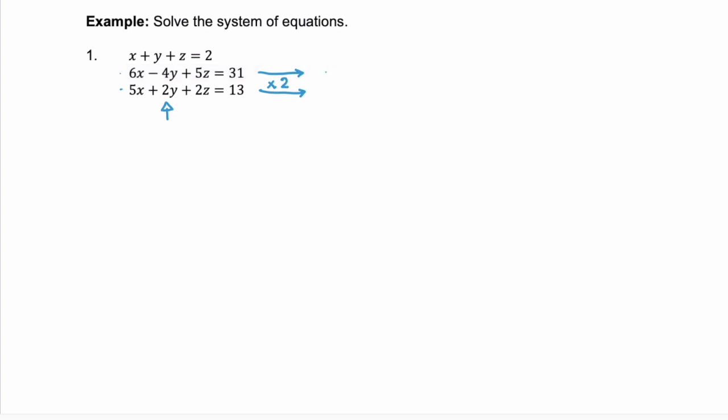Equation two remains the same: 6x - 4y + 5z = 31. Now we multiply the third equation by two. We get 10x + 4y + 4z = 26. Remember with elimination your goal is to eliminate one of the variables. You're going to alter an equation multiplying all of the terms by some constant so that when you add the equations one variable gets eliminated. We're going to do this slowly until we get down to just one variable that we can solve for.